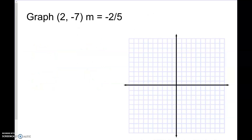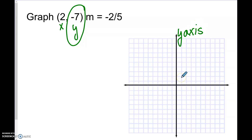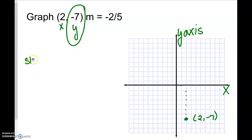Now we want to make sure we know how to do some graphing. We need to graph this ordered pair, which is x, y. The y-axis: we go negative seven for y, and x is two. So in the direction of x, go two, then down seven. So this ordered pair is right two, down seven. Now they want us to use our slope — rise over run — which is rise negative two, run five.